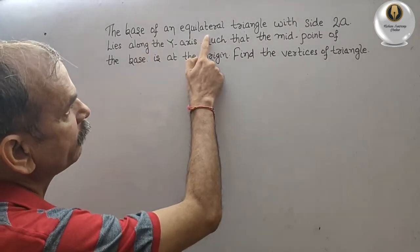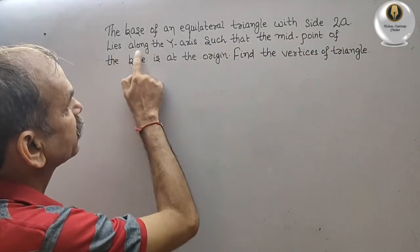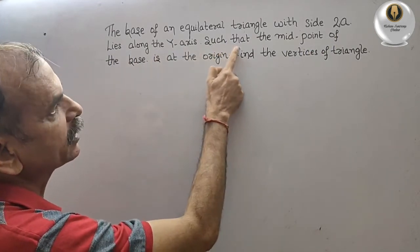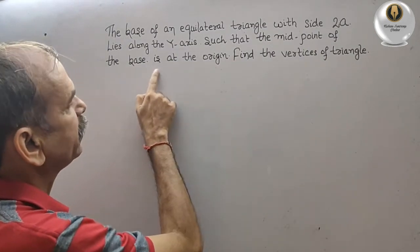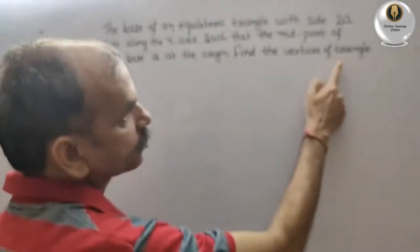The base of an equilateral triangle with side 2a lies along the y-axis such that the midpoint of the base is at the origin. Find the vertices of triangle.